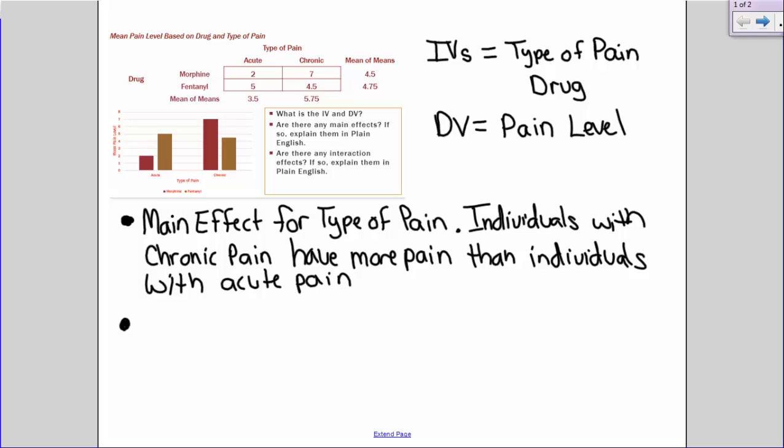You can also look at your graph. So you see for the acute condition, the gold bar is higher, but for the chronic condition, the red bar is higher. In this case, gold represents fentanyl and red represents morphine. So you know you have an interaction effect through that as well. Or you could do the, I'm going to draw a line connecting my bars, and you see you get a little crossover interaction effect there as well.